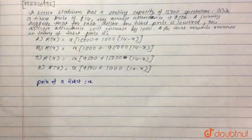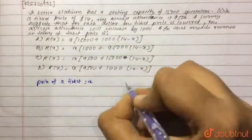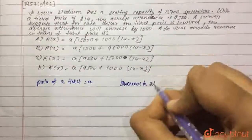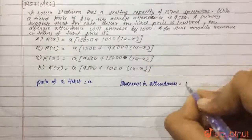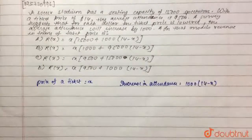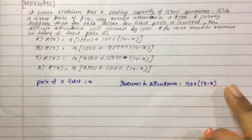Then the increase in the number of people coming to the soccer stadium will be increase in attendance. So increase in attendance will be 1,000 into 14 minus X. And now the ticket price was X and the increase in attendance was 1,000 into 14 minus X.